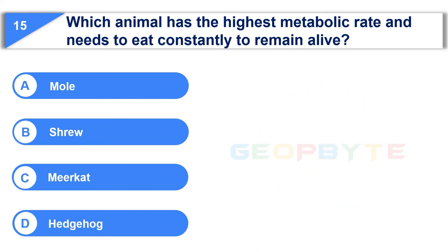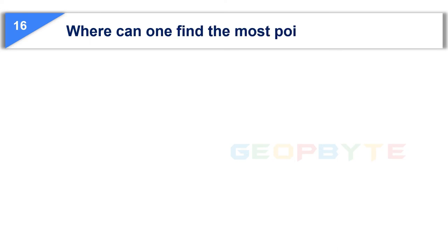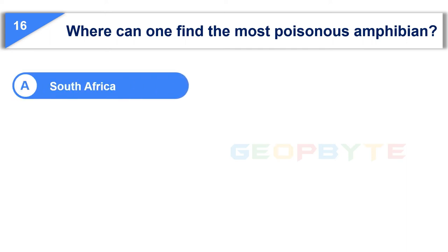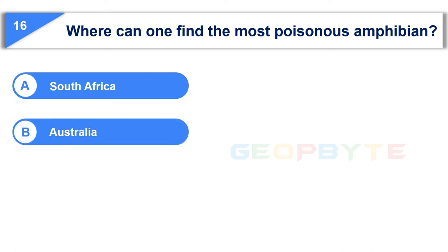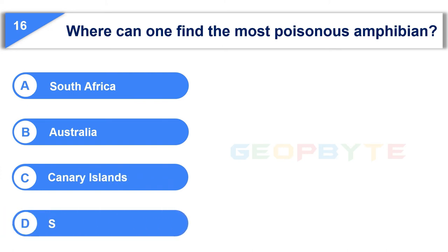Your time is up and the correct answer is Option B: Shrew. The 16th question is: where can one find the most poisonous amphibian? Option A: South Africa. Option B: Australia. Option C: Canary Islands. Option D: South America. Your time starts now.